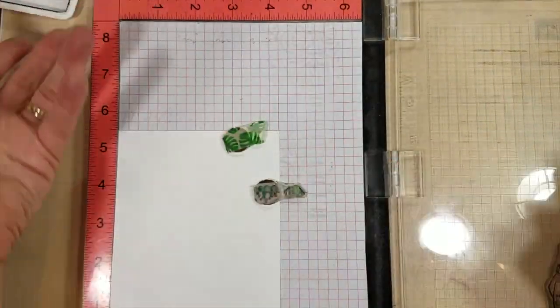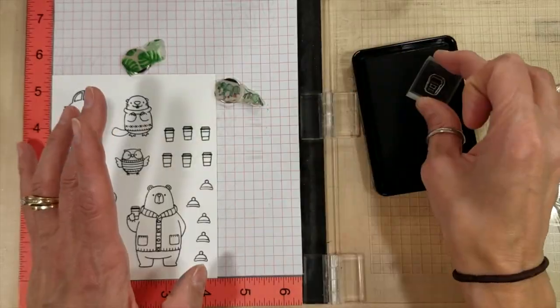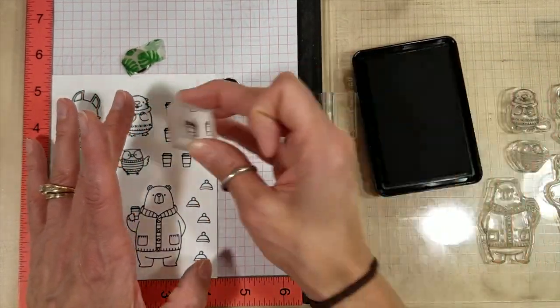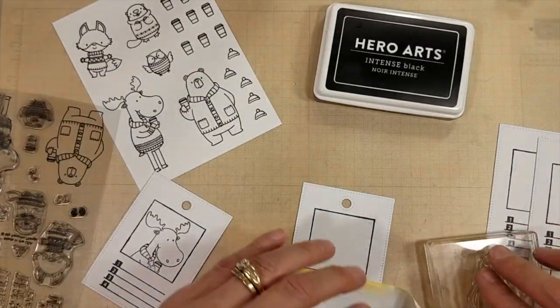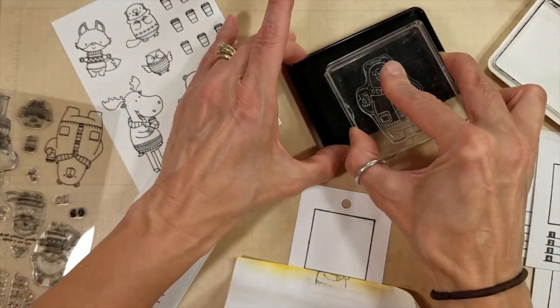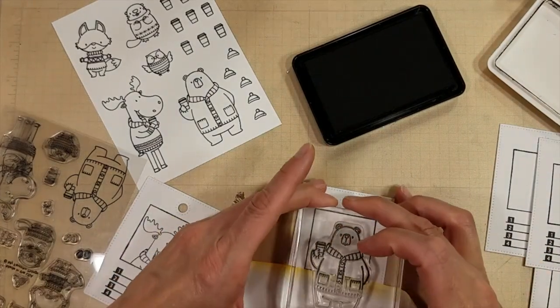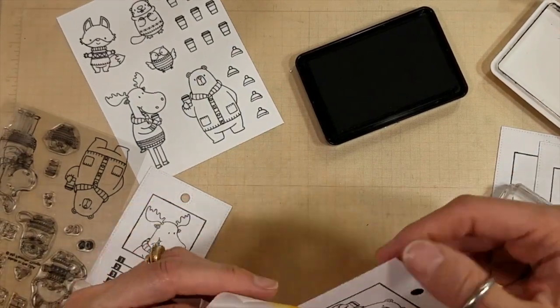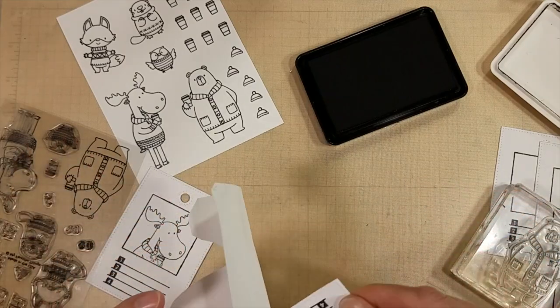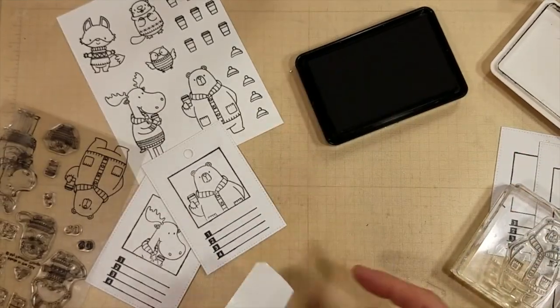I'm going to stamp them out with some Hero Arts Intensified Black ink on Neenah Solar White 80 pound smooth white cardstock, and I'm also going to stamp them on these color swatch cards that I created using the Waffle Flower swatches. I'll remember to link those in the description box below.